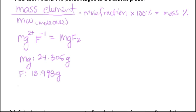The molecular weight is just the sum of all the atoms in that molecule. So it would be one magnesium and two fluorines, and when you add that up you get 62.301 grams.